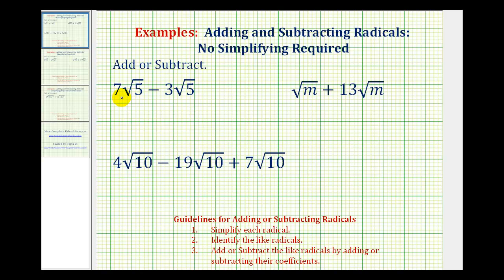So for our first example, we have 7√5 minus 3√5. These are like radicals because they both contain a factor of √5.